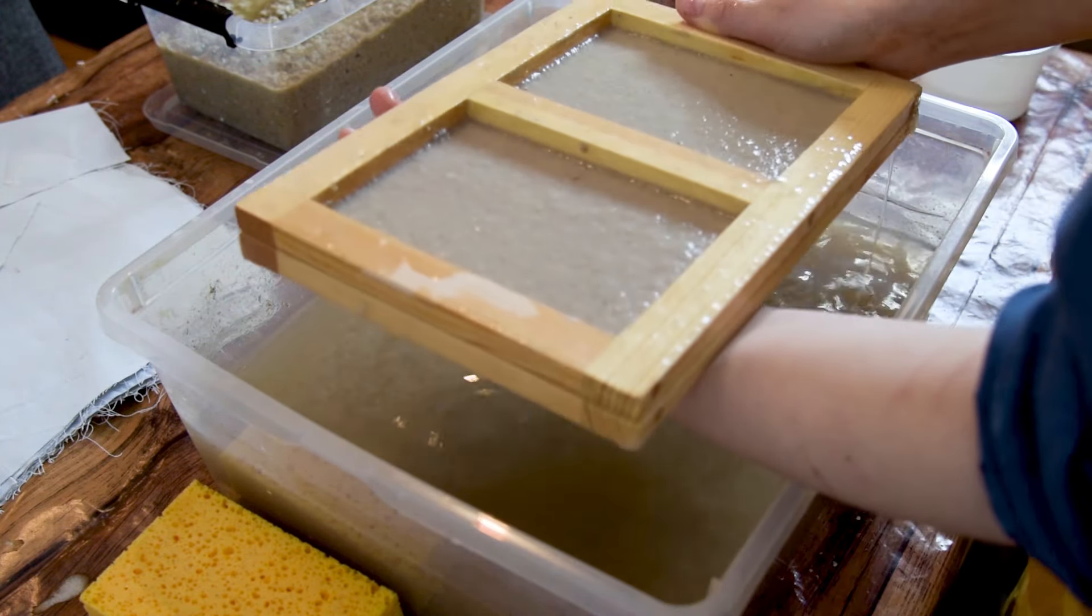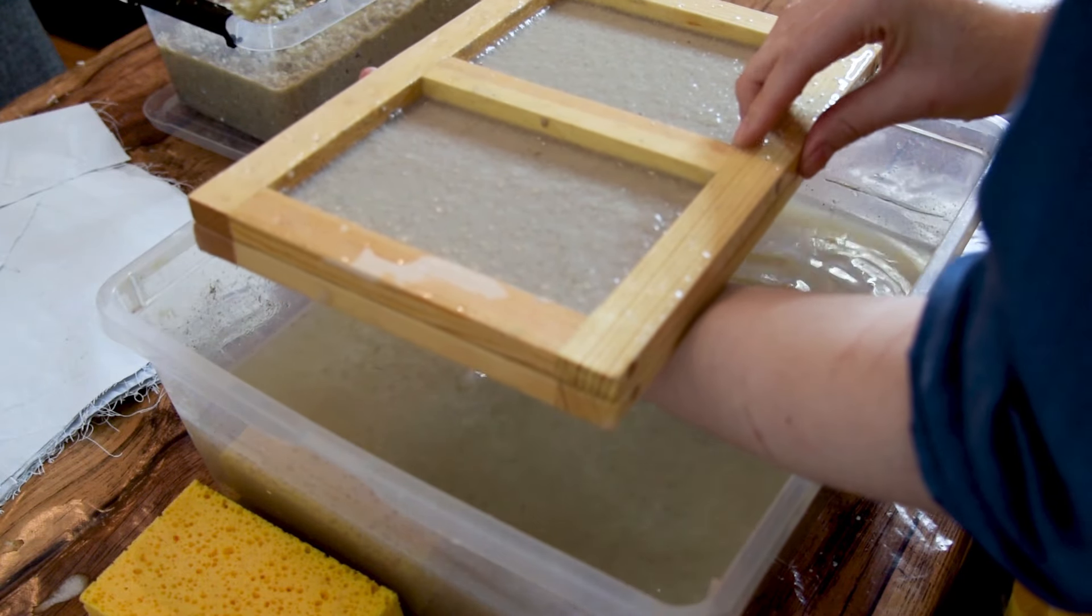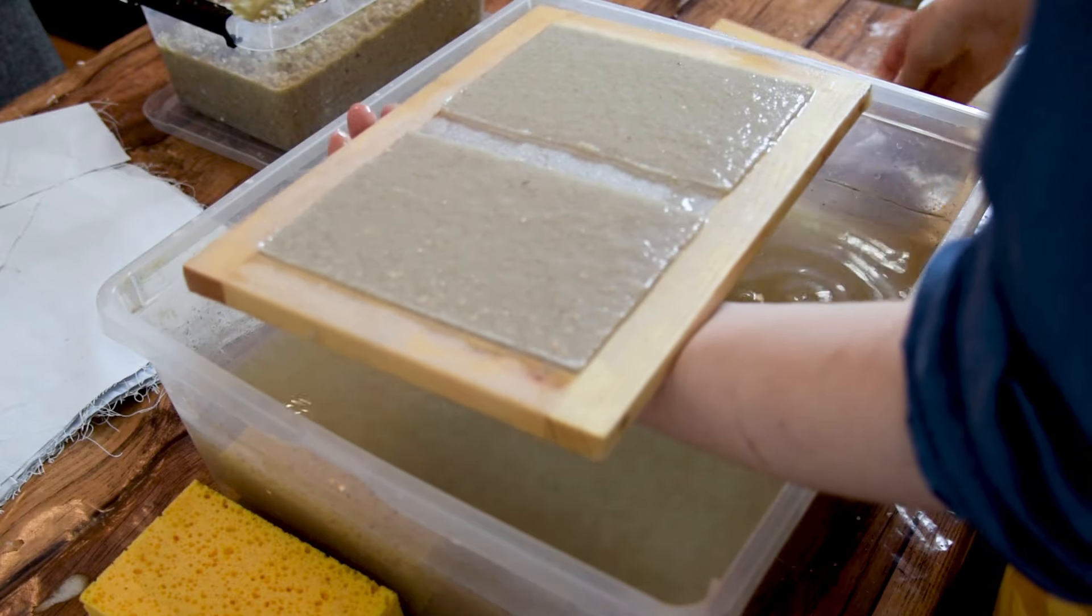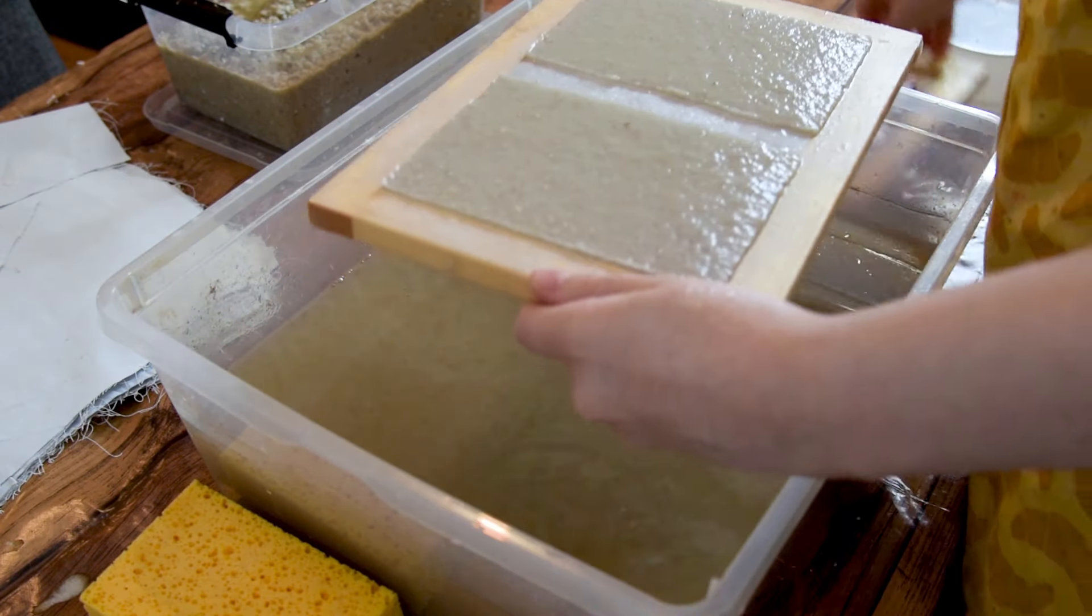I let all the water drain out and once most of it is out, I balance it on my arm and carefully take off the deckle to reveal the two sheets of paper. I then put the mold to the side.